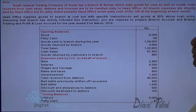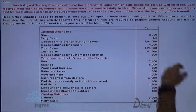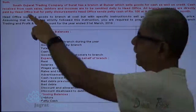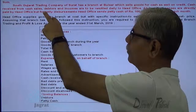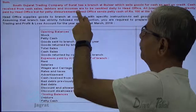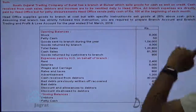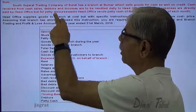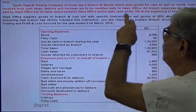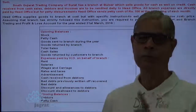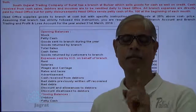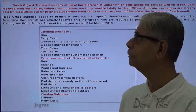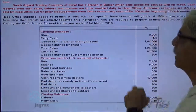South Guggar Trading Company of Surat has a branch in Balsar which sells goods for cash as well as on credit. Cash received from cash sales and cash received from debtors' income are to be remitted daily to the head office. All branch expenses are directly paid by the head office, but for petty disbursement, the head office sends petty cash of rupees 100 at the beginning of each month — so during a year, 1200 rupees are sent.